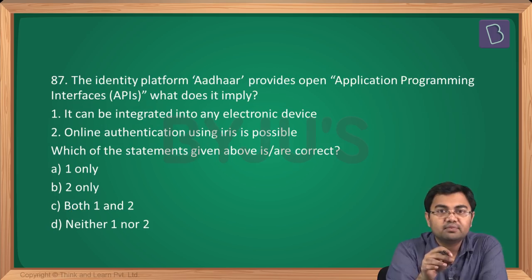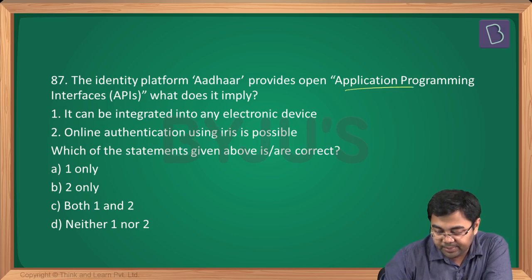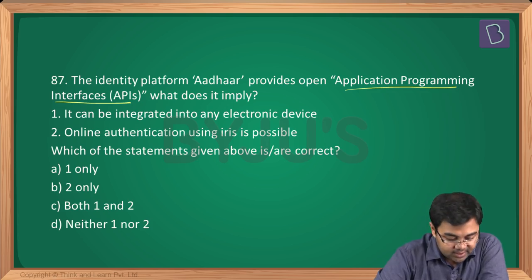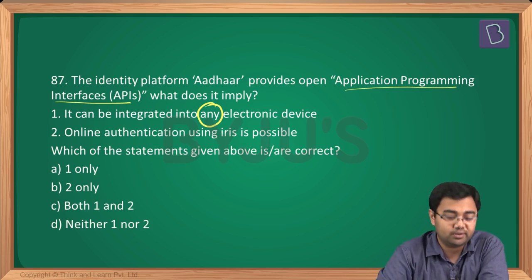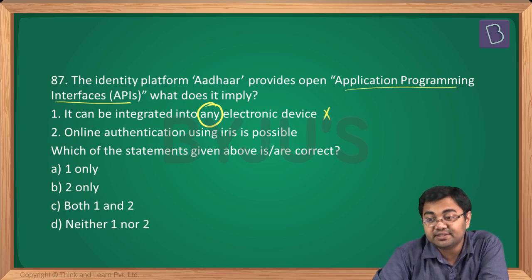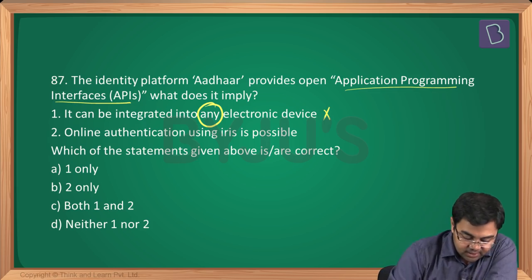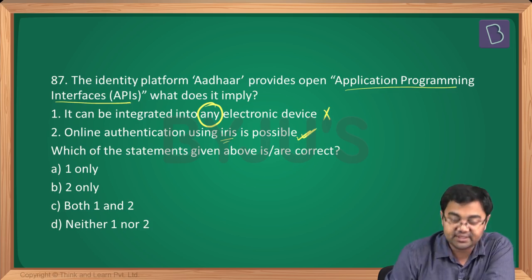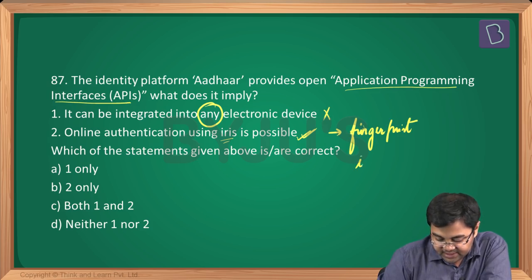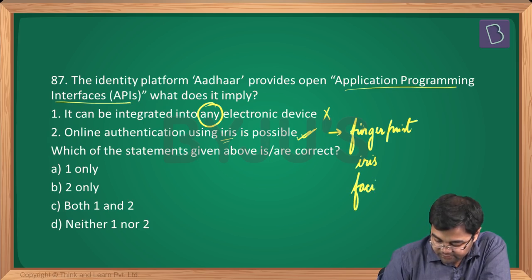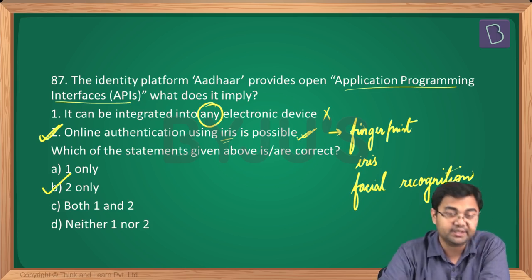Question number 87: the identity platform Aadhaar provides open application programming interfaces. What does it imply? Statement 1 says it can be integrated into any electronic device — 'any' is too strong a word, so this is not entirely correct. Statement 2 says online authentication using iris is possible — yes, there are three authentication methods: fingerprint, iris scan, or facial recognition (though facial recognition is not currently in place). Using iris is possible, so the correct answer is B.